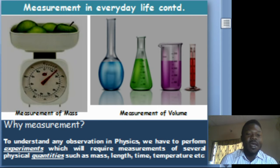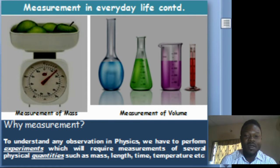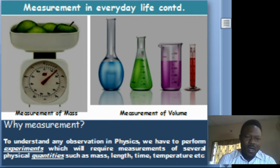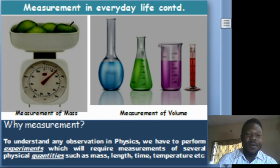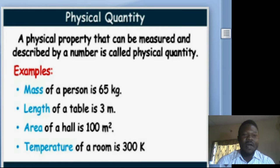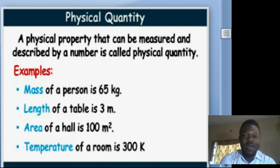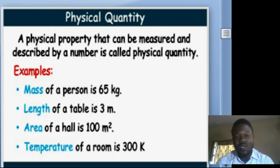Why do we measure? To understand any observations in physics we have to perform experiments, and any time we perform experiments we always require measurements of several physical quantities such as mass, length, and time. A quantity simply means physical properties of matter that are measurable — physical properties of matter that can be measured and described by a number are called physical quantities.